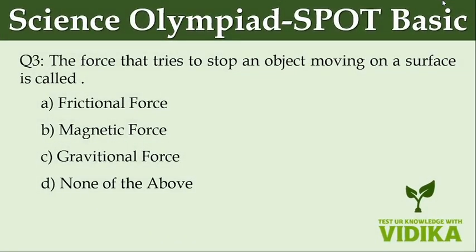The force that tries to stop an object moving on a surface is called dash. Option A, frictional force. Option B, magnetic force. Option C, gravitational force. Option D, none of the above.